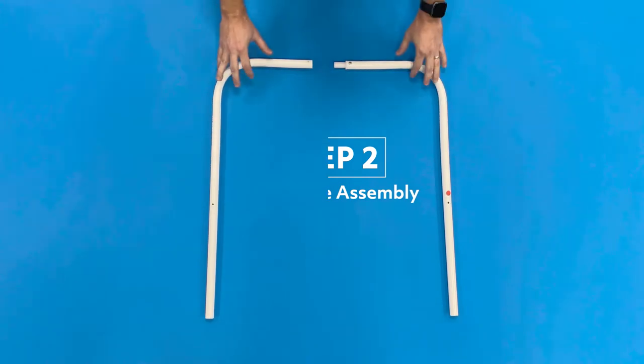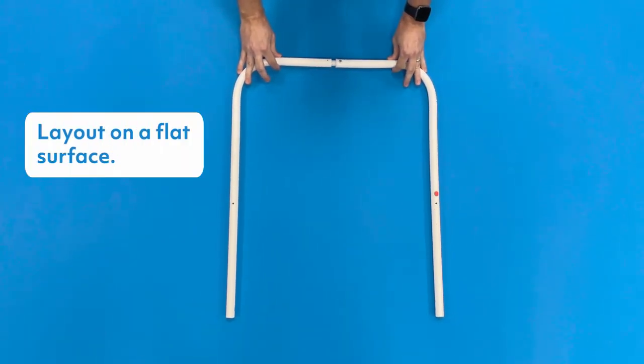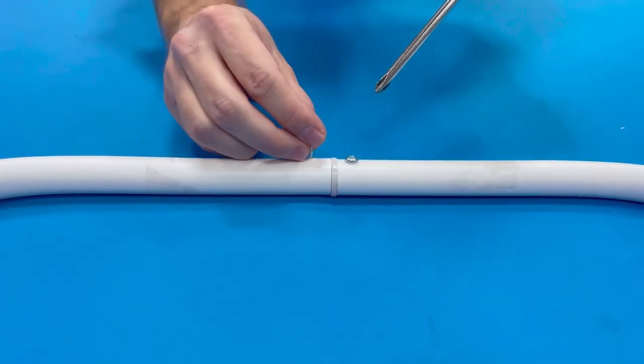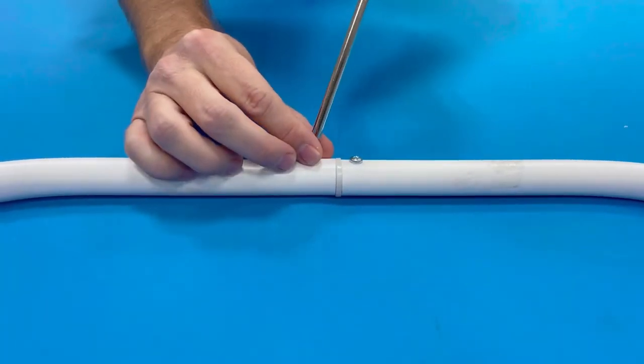Step two, back frame assembly. From this view, make sure that the red dot is on the right side of the frame. Secure the set screw with the Phillips head screwdriver.